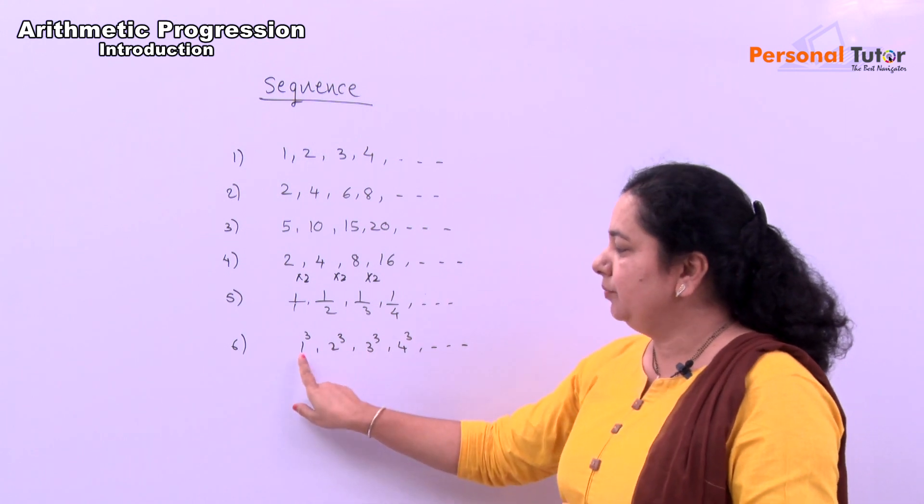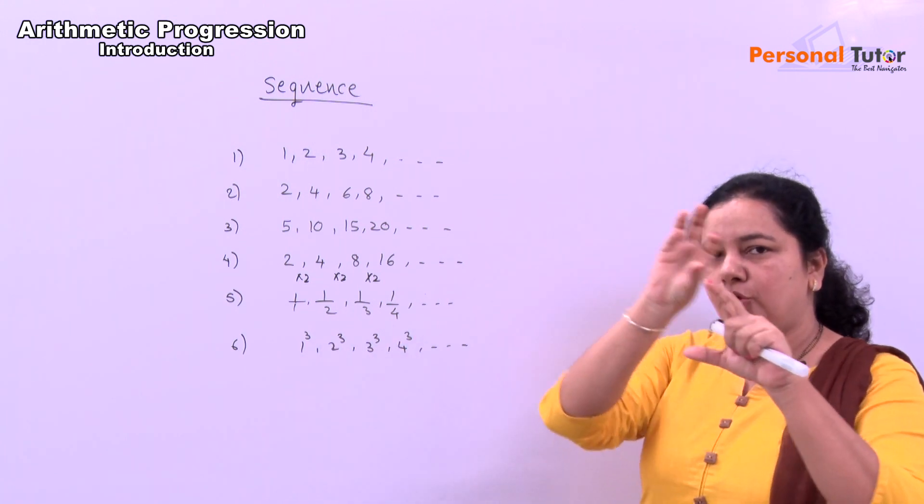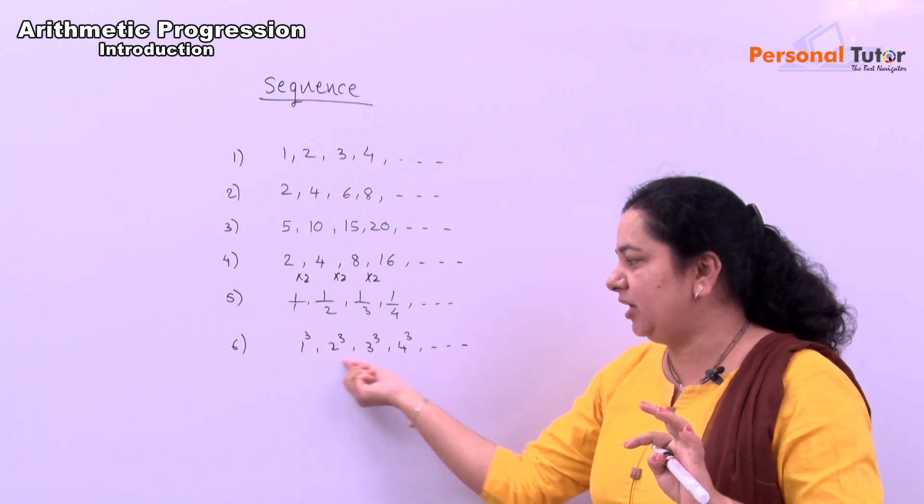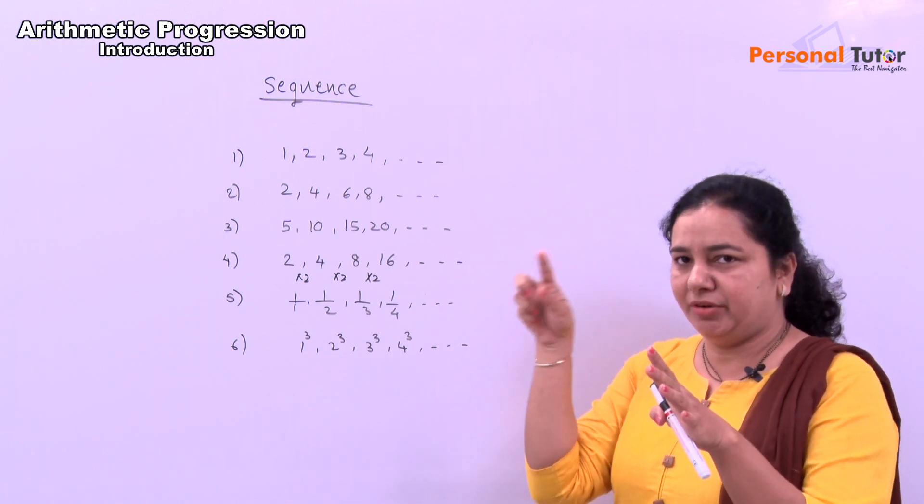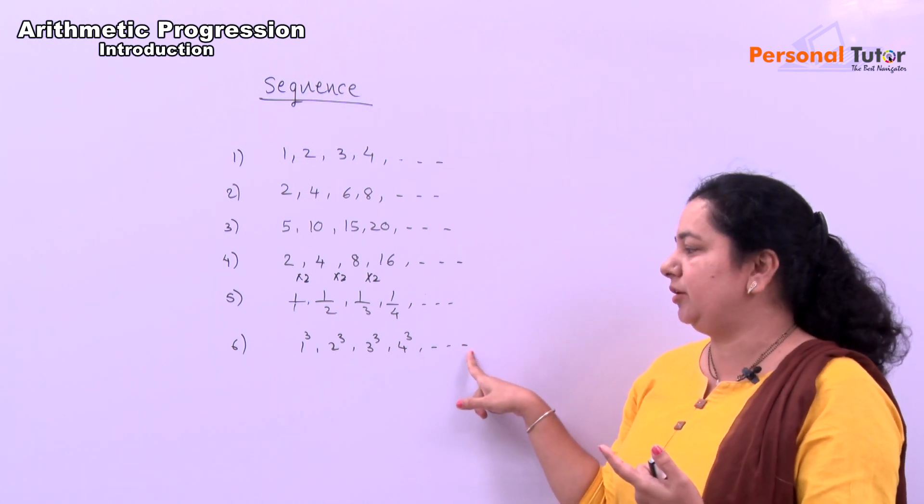And in last example, 1 cube, 2 cube, 3 cube, 4 cube. Means cube part is common. Only the numbers below change by adding 1. Therefore, next number is 5 cube, 6 cube, 7 cube. Like this.